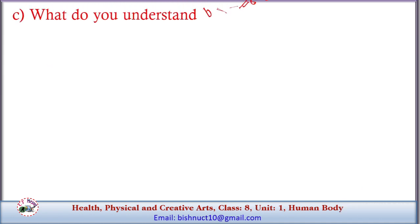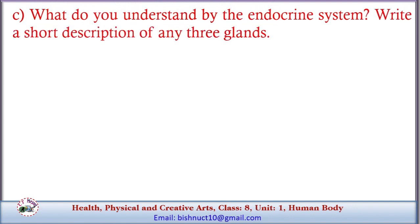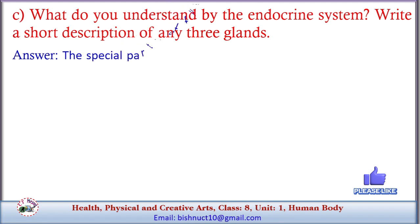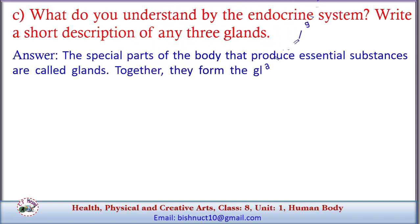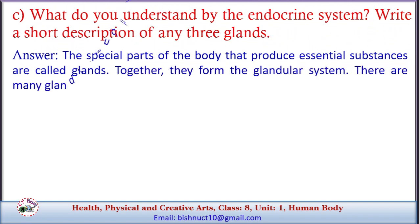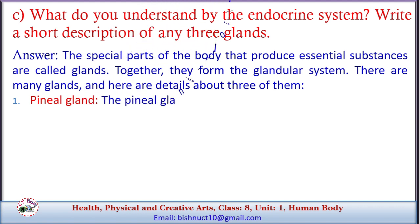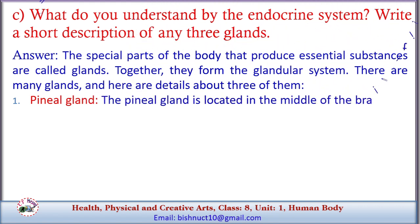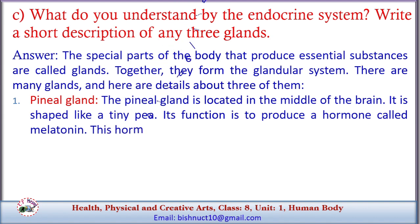C. What do you understand by the endocrine system? Write a short description of any three glands. Answer: The special parts of the body that produce essential substances are called glands. Together, they form the glandular system. There are many glands; here are details about three of them. 1. Pineal gland: located in the middle of the brain, shaped like a tiny pea. Its function is to produce a hormone called melatonin, which helps us to sleep.